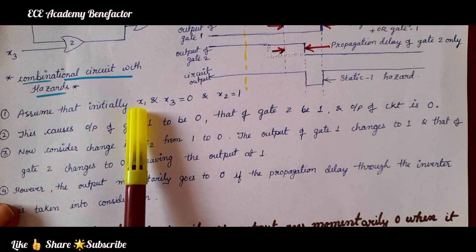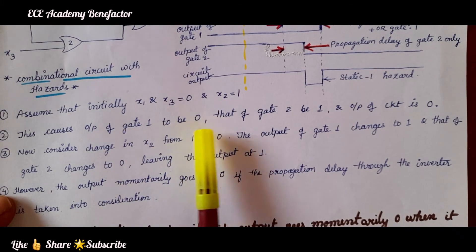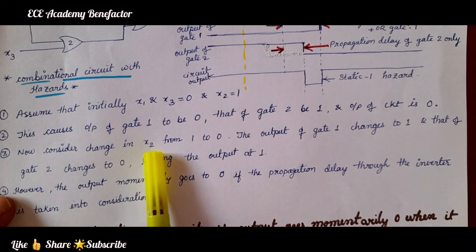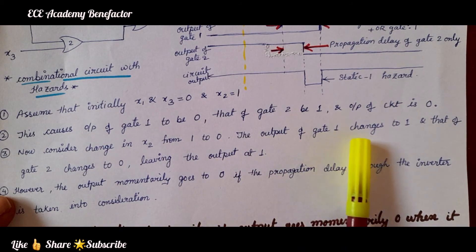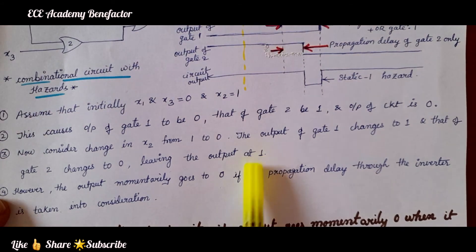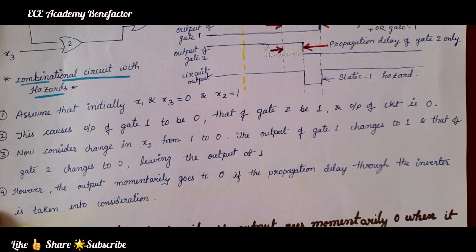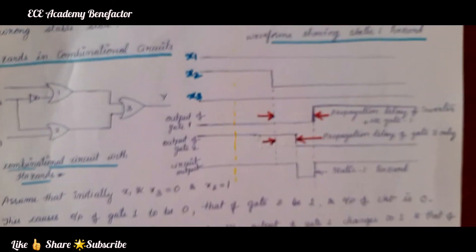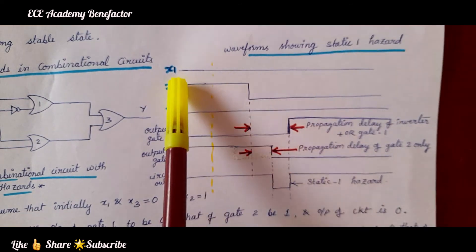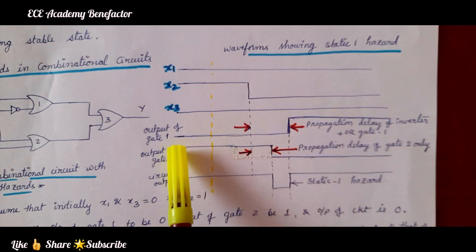Assume that initially x1 and x3 are 0 and x2 is 1. This causes the output of gate 1 to be 0, gate 2 to be 1, and the output of the circuit to be 0. Now consider a change in x2 from 1 to 0. The output of gate 1 changes to 1 and gate 2 changes to 0, leaving the output at 1. However, the output momentarily goes to 0 if the propagation delay through the inverter is taken into consideration.